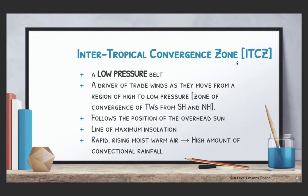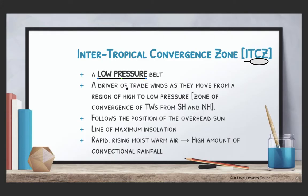We're going to jump right into the Intertropical Convergence Zone, known as your ITCZ. So your ITCZ is basically a low pressure belt. You need to understand that ITCZ is a low pressure belt, not a high pressure belt. Your ITCZ is a driver of trade winds — notice the key term here: they are a driver. They are not trade winds; they drive the trade winds.